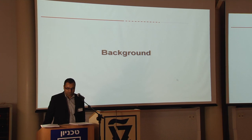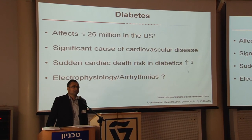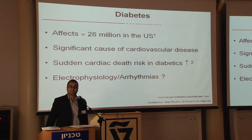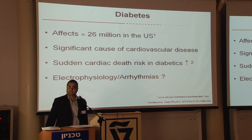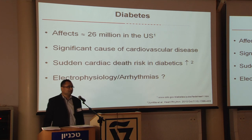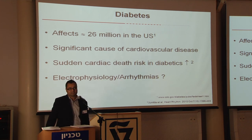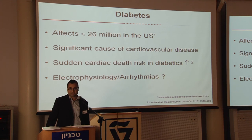To start with the background and motivation for our study: if you go to the site of the Center for Disease Control in Atlanta, they have statistics suggesting that about 26 million people in the United States suffer from diabetes, and diabetes is a significant cause of cardiovascular disease. Epidemiological studies also suggest that the risk of sudden cardiac death is much higher in diabetic patients. The underlying mechanisms are not very clear, and my research focuses on how cardiac ventricular electrophysiology is altered in diabetes and how this can lead to arrhythmias, a major cause of sudden cardiac death.